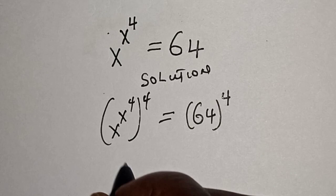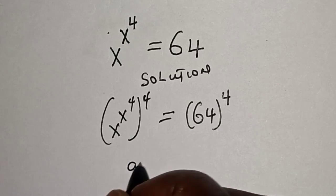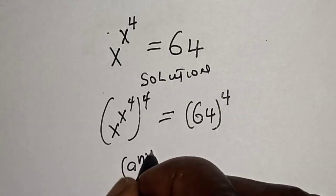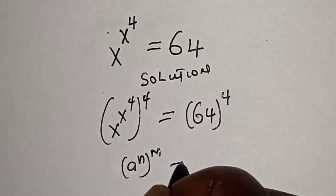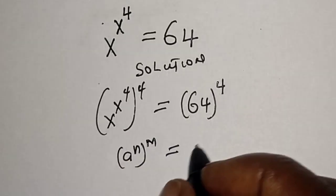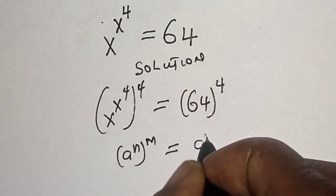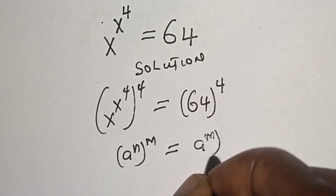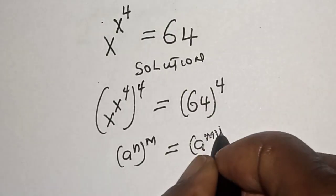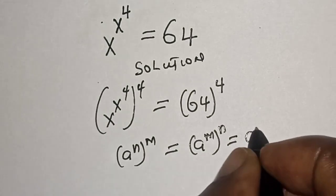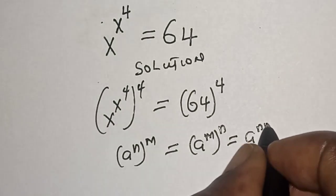Now, remember this rule: a raised to power n raised to power m is equal to a raised to power m raised to power n, which is equal to a raised to power n.